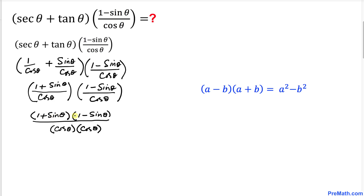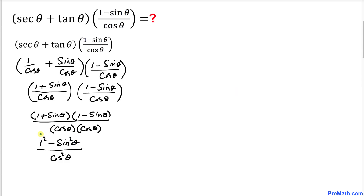We can see that the numerator represents a product of a sum and a difference, so we are going to use the difference of squares formula. The numerator becomes 1² minus sine²θ, and the denominator — cosine θ times cosine θ — becomes cosine²θ.